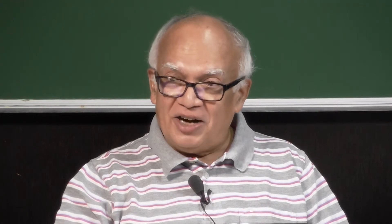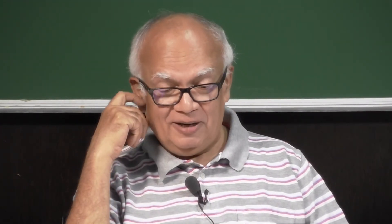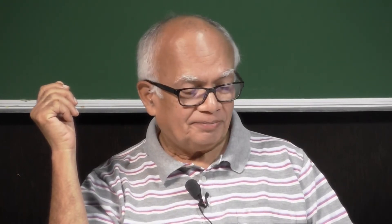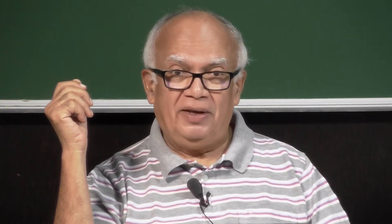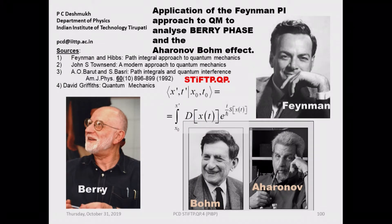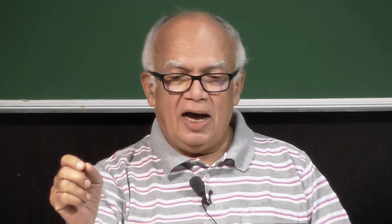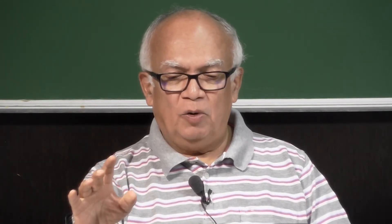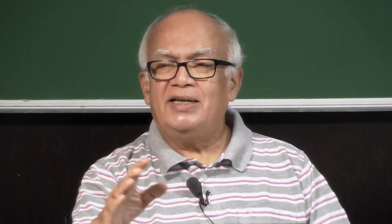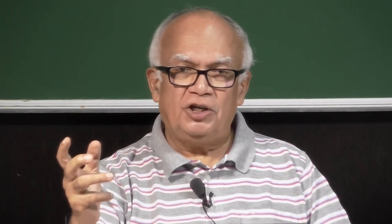I hope that we are on the right track. What we are going to discuss today is a further application of Feynman's path integral approach. The path integral, as we have seen, is an equivalent way of doing quantum mechanics. We saw the beautiful equivalence between the de Broglie–Schrödinger approach and the path integral in explaining interference patterns in a double-slit experiment. This is the Feynman approach, or if you want, the Dirac–Feynman approach, because the original idea came from Dirac.